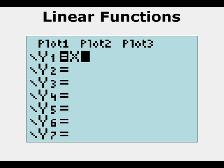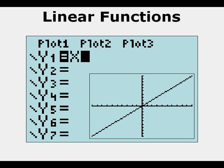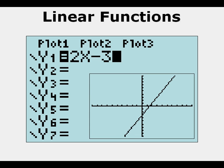We go to our function editor and put in the linear parent function, y equals x, and this is what it looks like. As we change the parameters and make, in this case, y equals 2x minus 3, this is what it looks like.